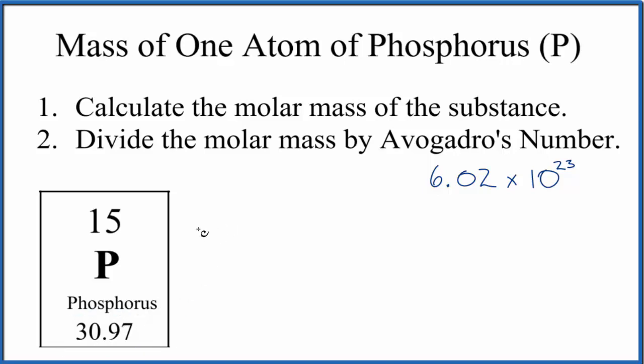The average atomic mass for phosphorus is 30.97, and you can think about the units as grams per mole. So we have 30.97 grams for one mole of phosphorus.